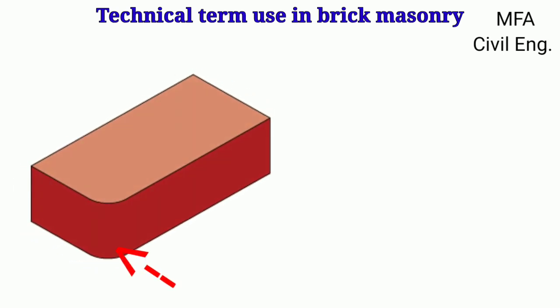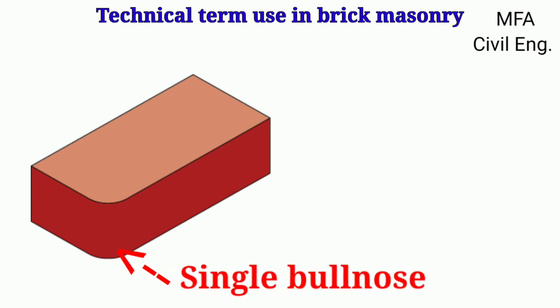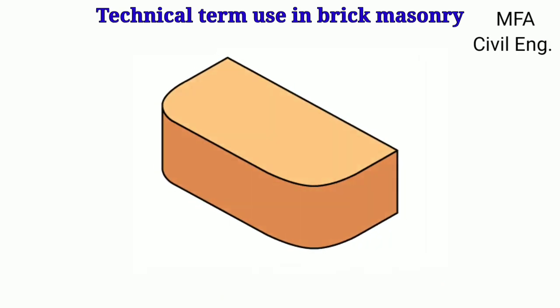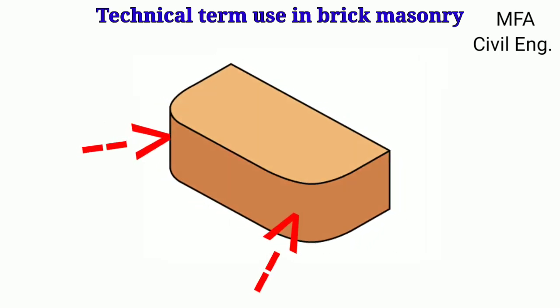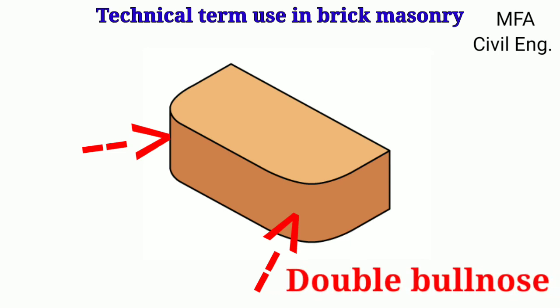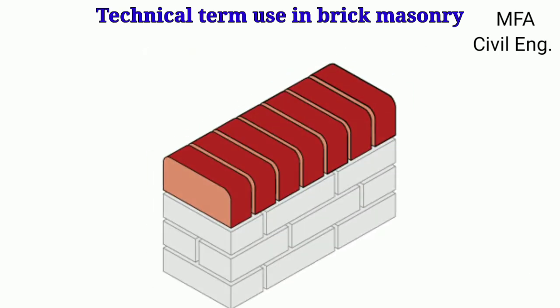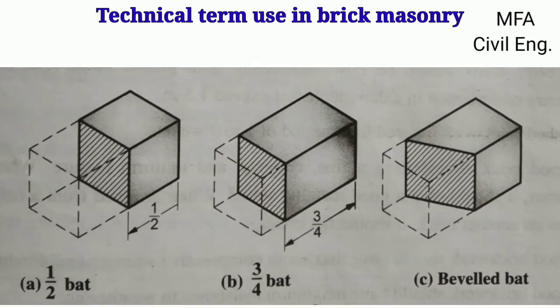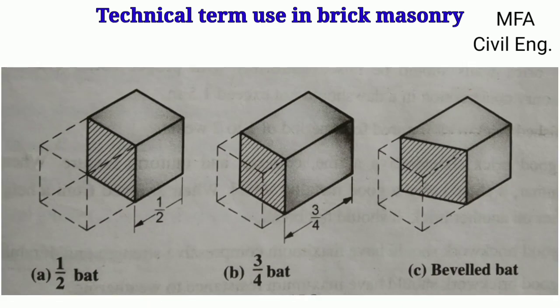A brick with one edge rounded and the other edge at right angle is termed the single bullnose. If a brick has two edges rounded, it is termed the double bullnose. Bullnose bricks are generally used for rounded coping. The portion of a brick when cut across the width is called the bat. There are three types of bat generally used in brick masonry construction: half bat, three-quarter bat, and beveled bat.